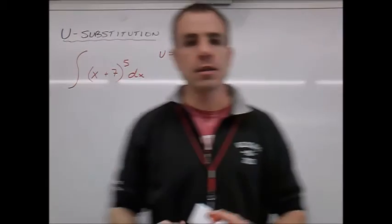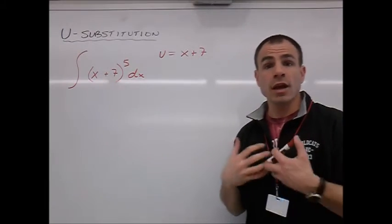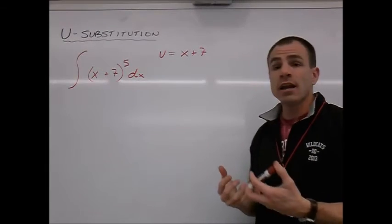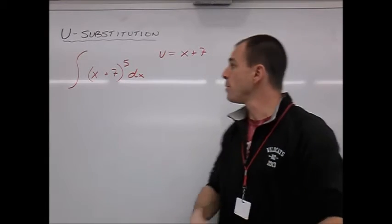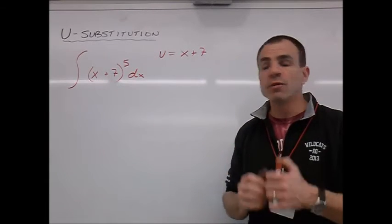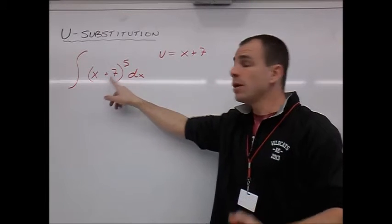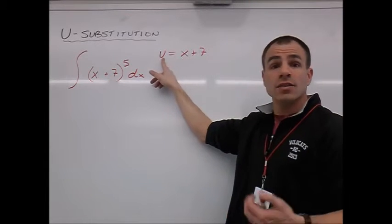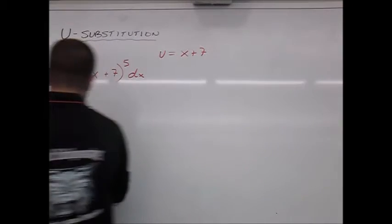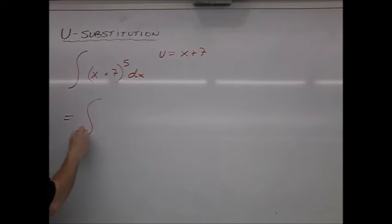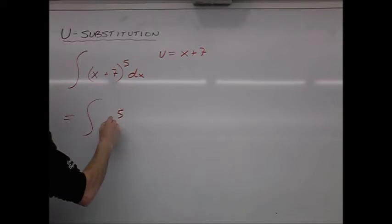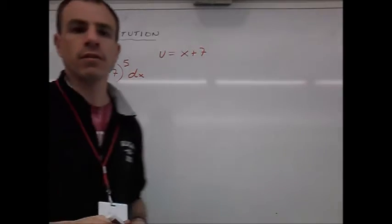By making this basic connection that we chose to do, that allows us to do substitution. We can rewrite this integrand. We can rewrite it in terms of u. We don't have to write x plus 7 because x plus 7 is equal to u. So we can then rewrite our integral and we now have u to the fifth.